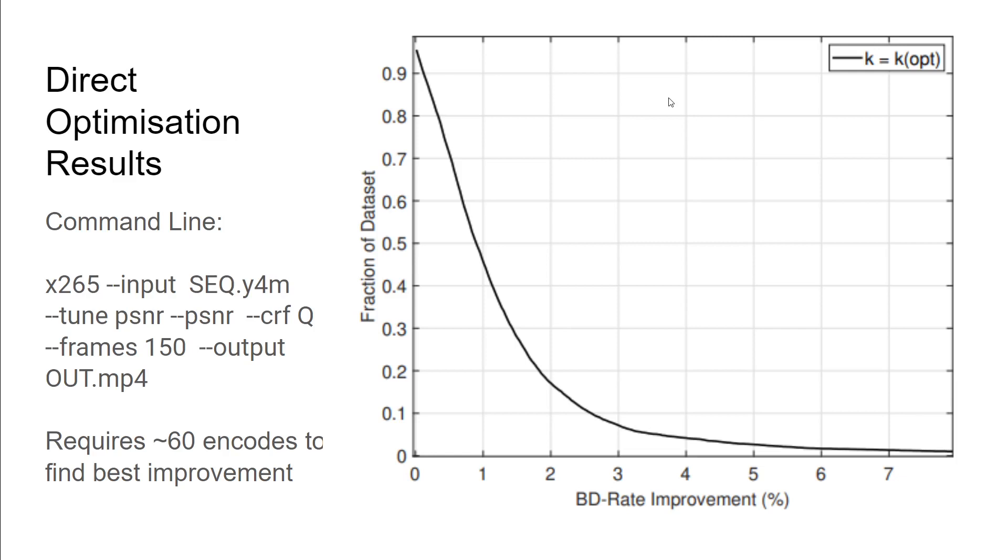In applying our direct optimization methods in our prior work using x265 as our codec, we were able to get great improvements. However, it requires roughly 60 video encodes to find the best improvements.